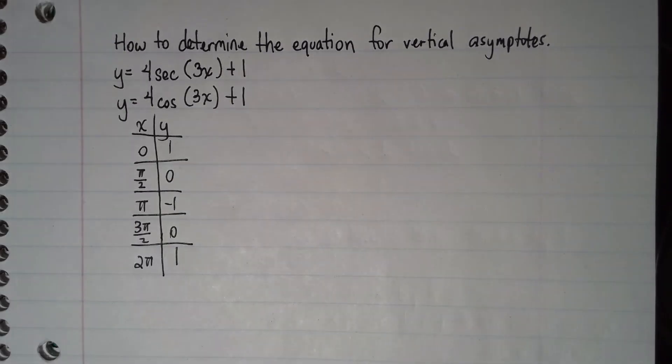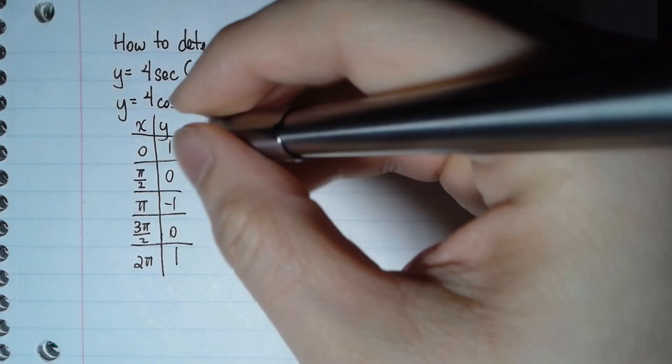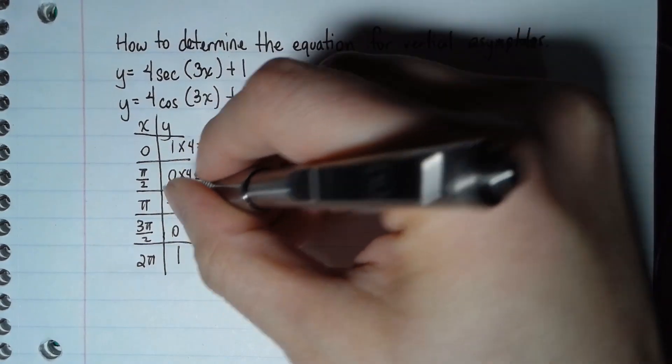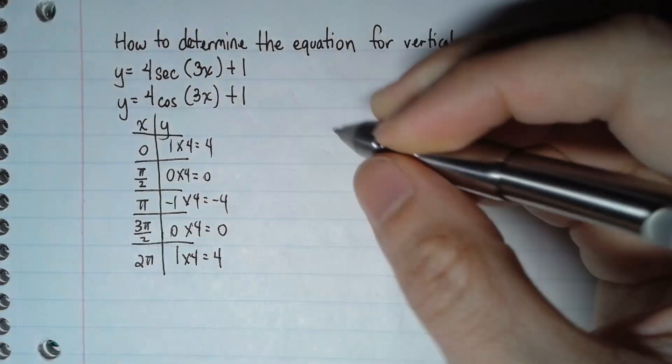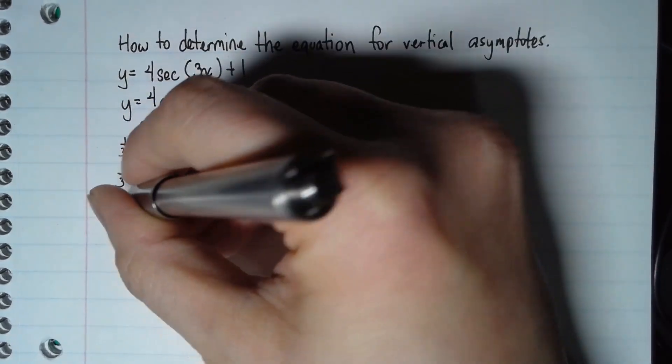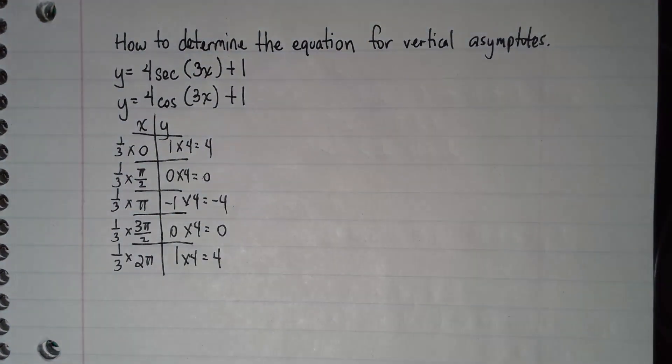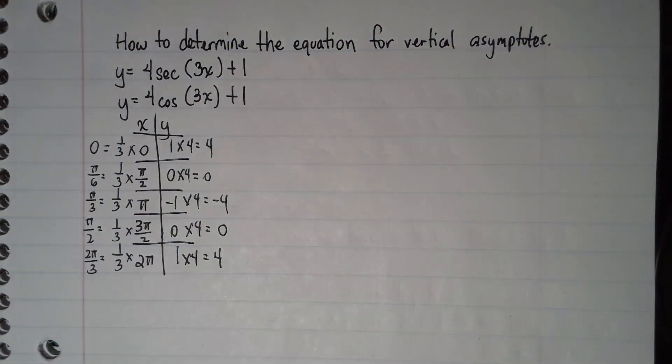This is the table for cosine. I'm just going to go through it pretty quickly. The times 4 outside the parentheses means I need to multiply this column, the y-coordinate, by 4. So this becomes 4, this becomes 0, negative 4, 0, and 4. This tells me to multiply the x by 1/3.